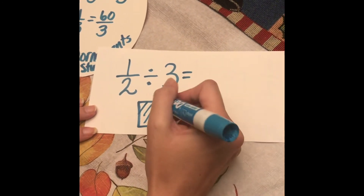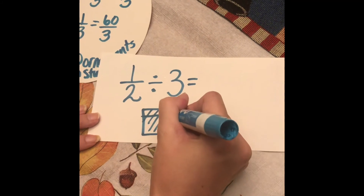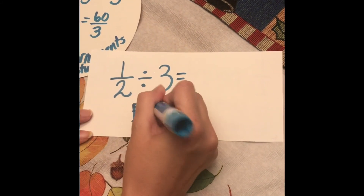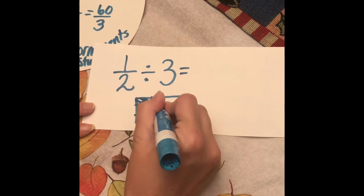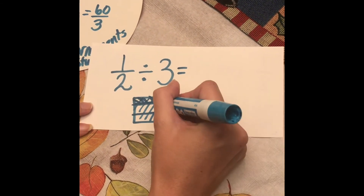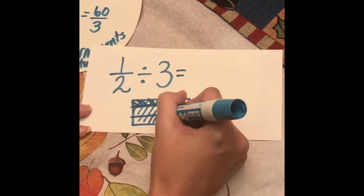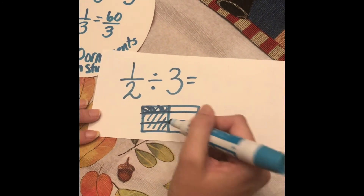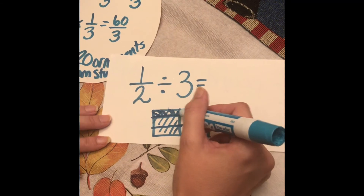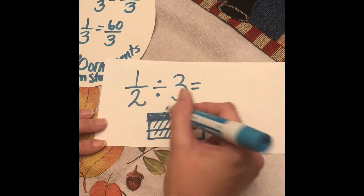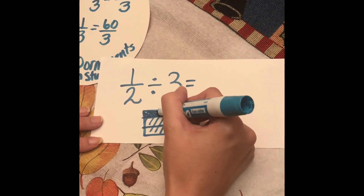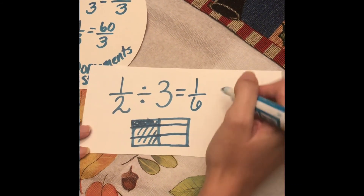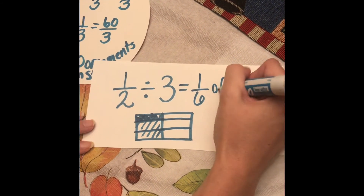I can draw a picture to help. This represents my half a pound, and I'm going to divide it into three parts. This portion represents what each person gets. If I extend my line, I can see how many total parts I have — six. My answer is one of those parts, so they each get one-sixth of a pound of candy.